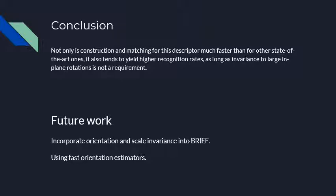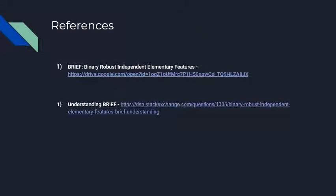To summarize: BRIEF is a descriptor that relies on a relatively small number of intensity difference tests to represent an image patch as a binary string. We can conclude that BRIEF achieves higher recognition rates as long as there are small in-image rotations. As future work, people can incorporate orientation and scale invariance into BRIEF and can use fast orientation estimators. Thank you all for watching.